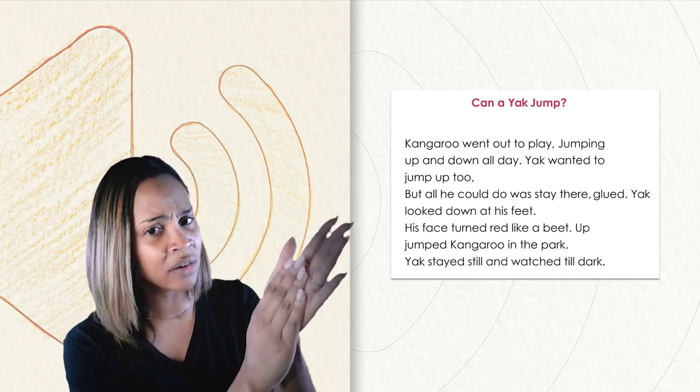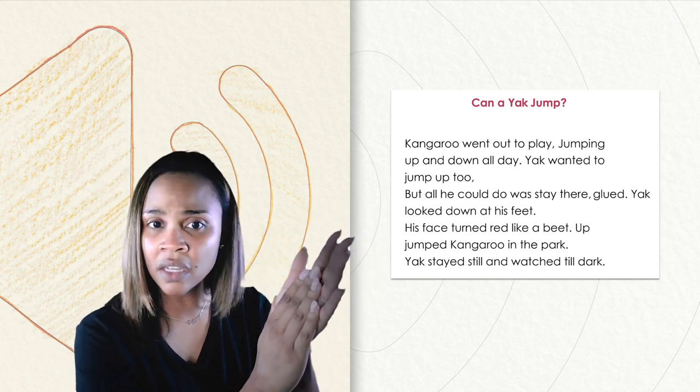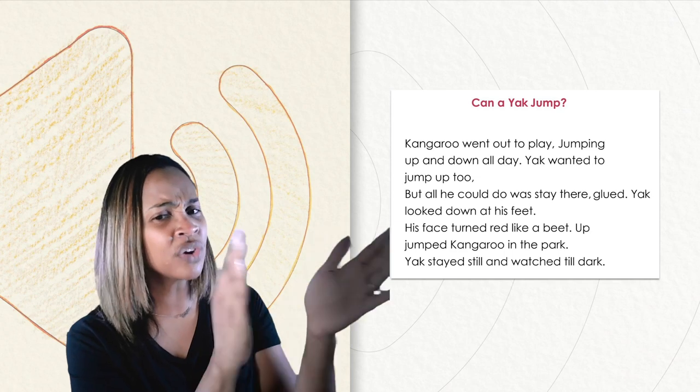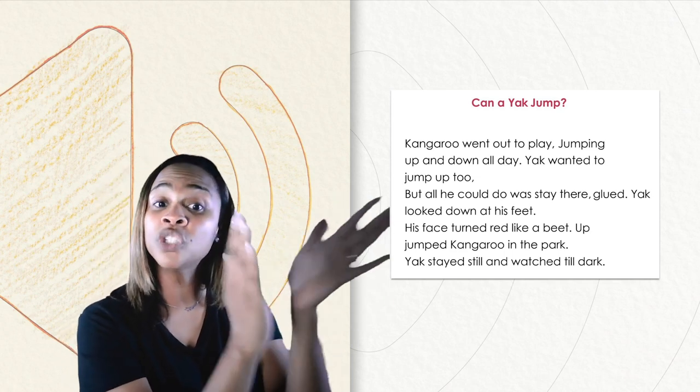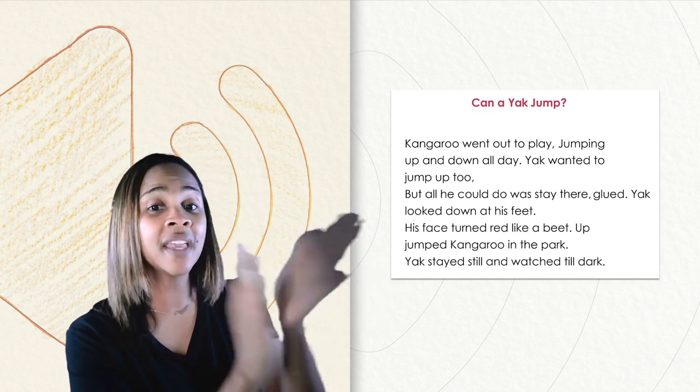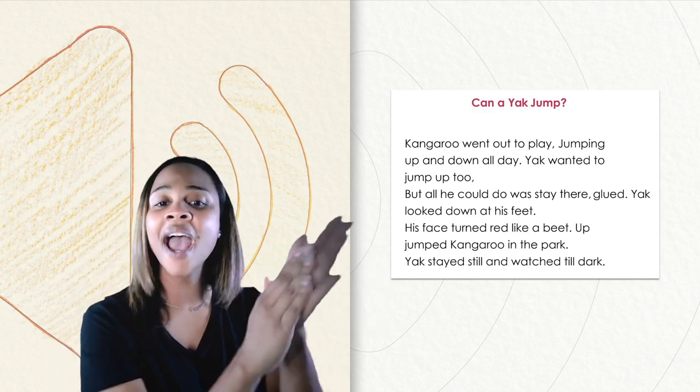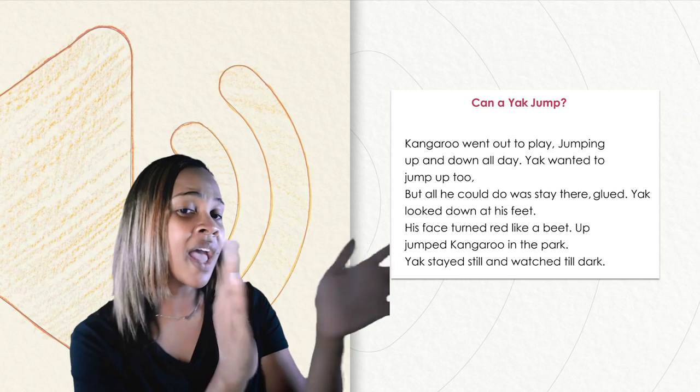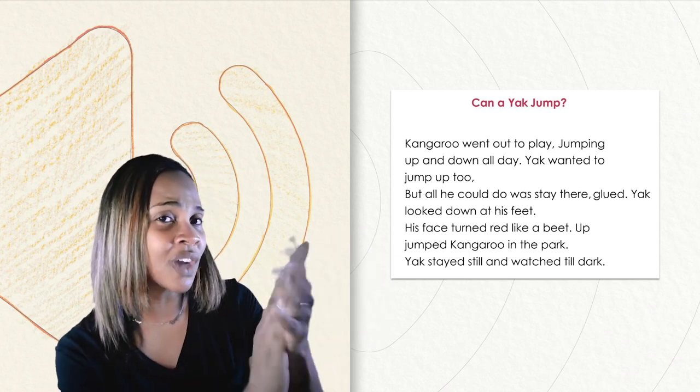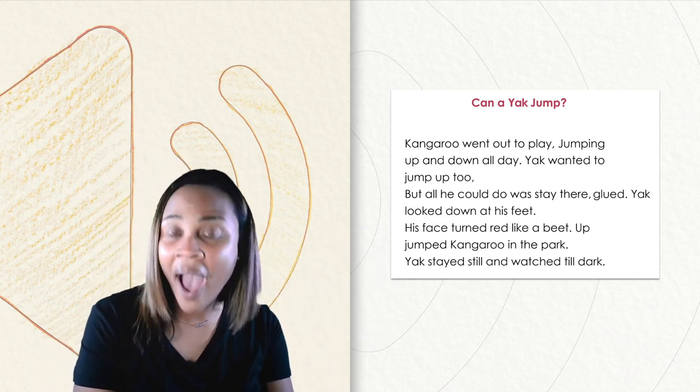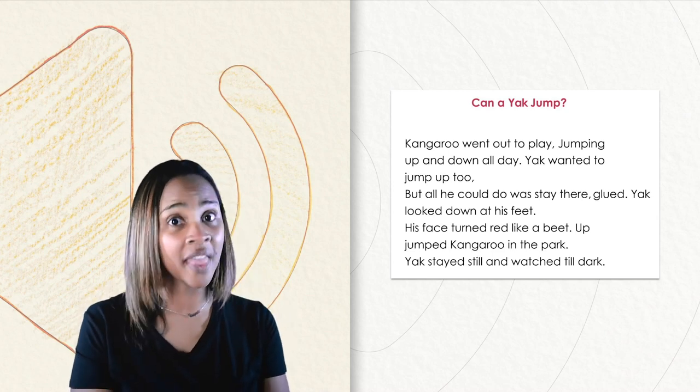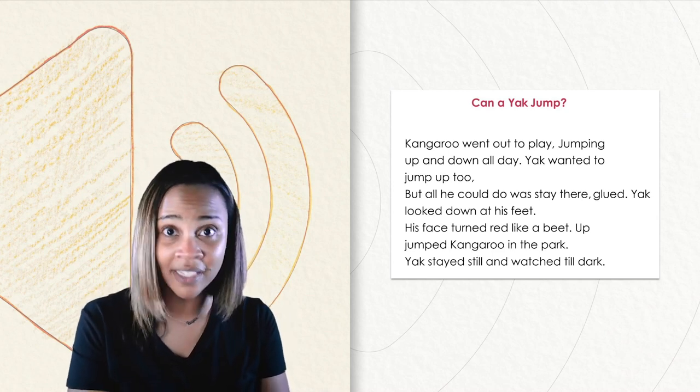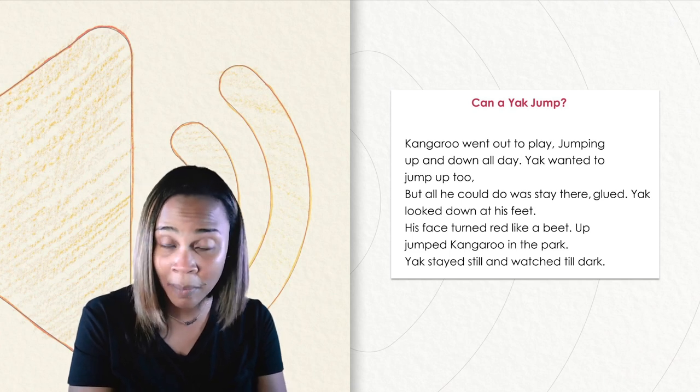Yak looked down at his feet. His face turned red like a beet. Up jumped kangaroo in the park. Yak stayed still and watched till dark. Wow. That was a lot of rhythm and so many beats and all of those words in our poem.